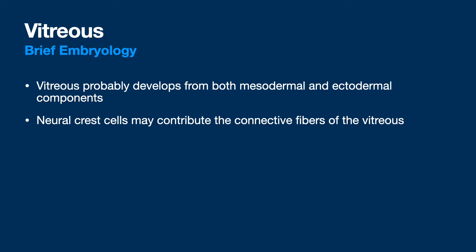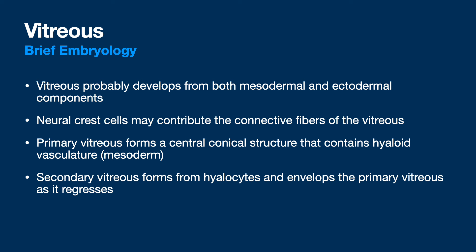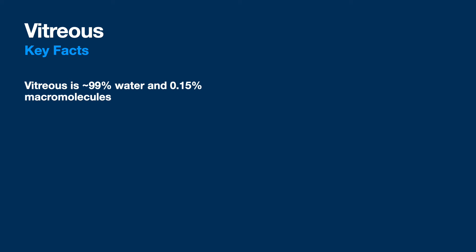The vitreous probably develops from both mesodermal and ectodermal components — no endoderm — and neural crest cells do contribute some connective fibers. The key things to emphasize: primary vitreous is the hyaloid vasculature that supplies the lens and then regresses. Secondary vitreous is what you have as an adult — the main vitreous gel with hyalocytes. Tertiary vitreous is the zonular fibers, which is testable but not super clinically relevant with a few exceptions.